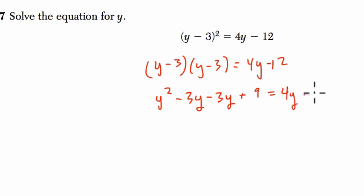So I'm just rewriting this. So now y squared equals, well, negative 3y and negative 3y is negative 6y plus 9 equals 4y minus 12.